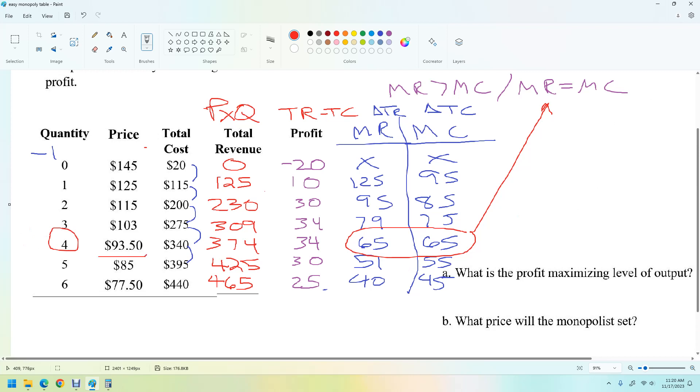And the price we're going to pick is $93.50. So that is how to do one of those with a table.